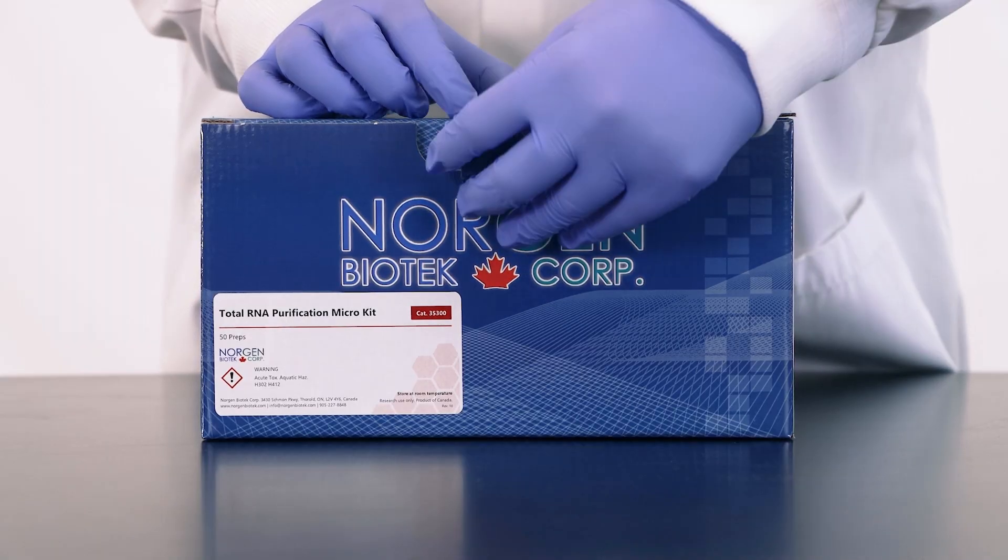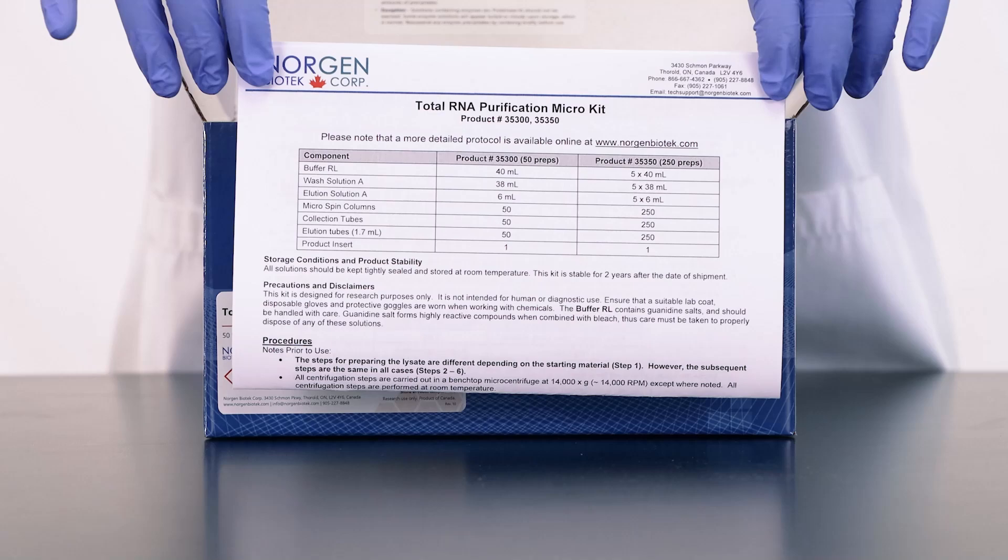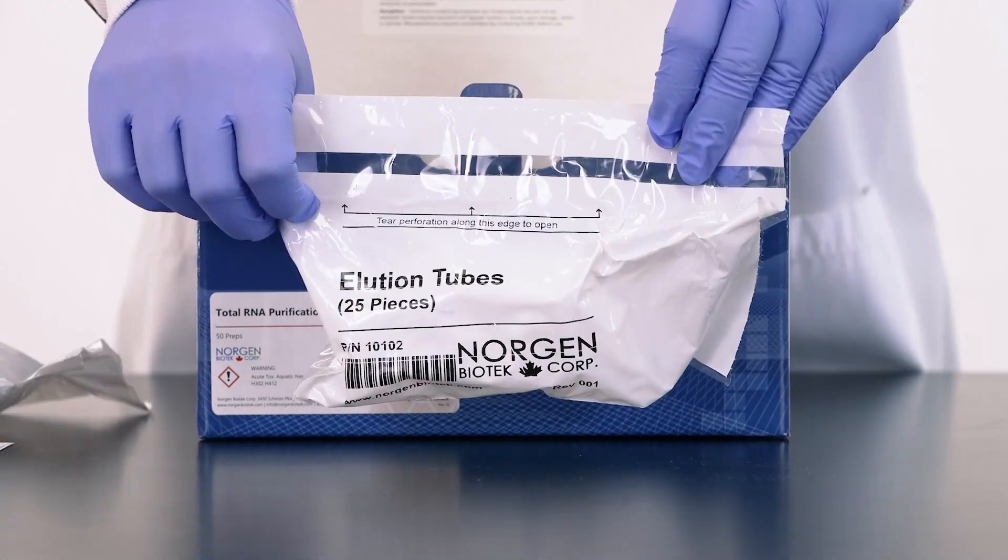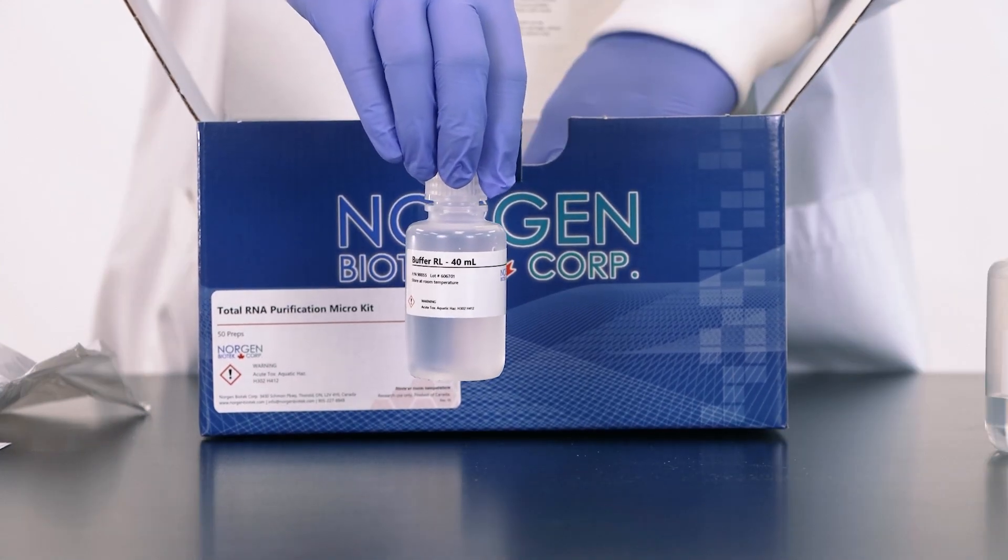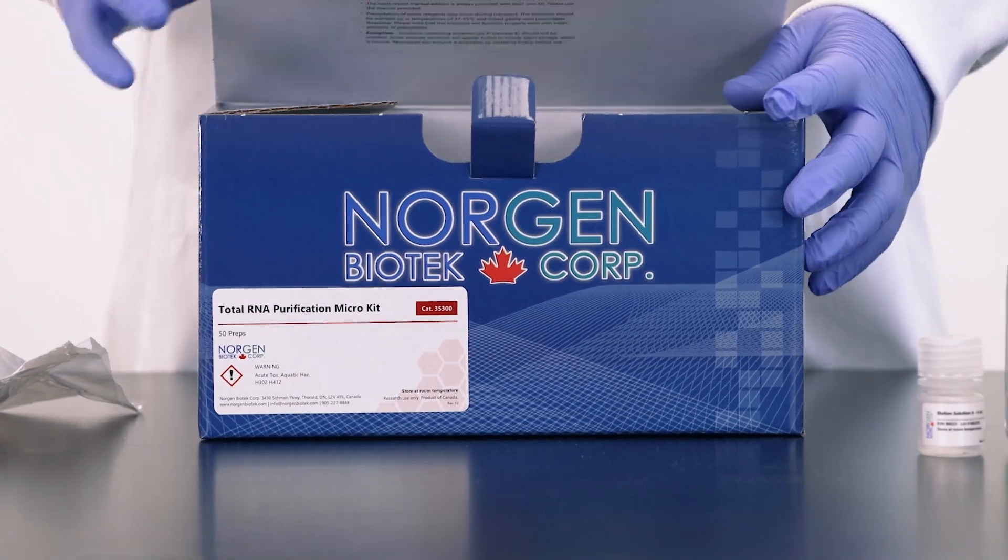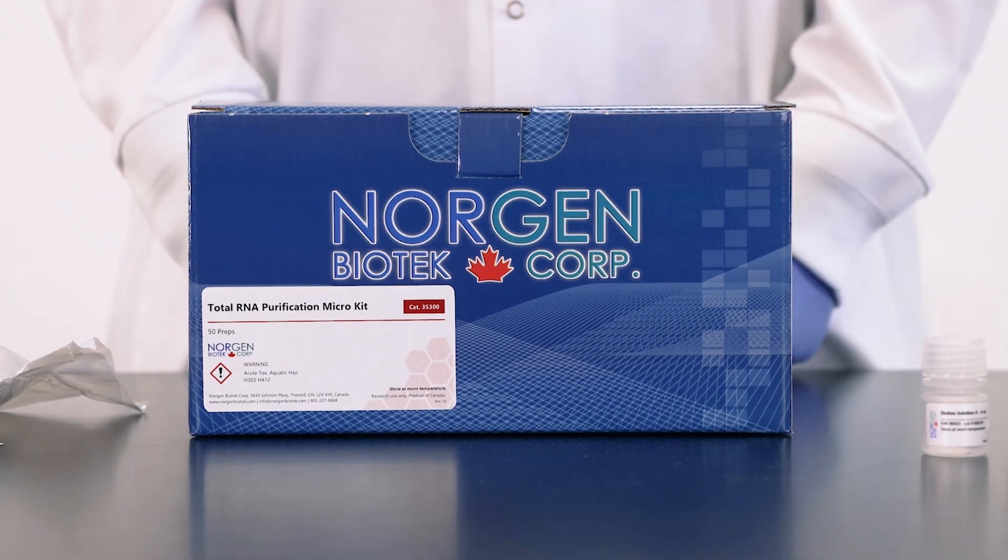Upon opening the kit, you will find a detailed product insert, micro-spin columns, collection tubes, elution tubes, wash solution A, buffer RL, and dilution solution A. You as the user will need to provide 96 to 100% ethanol and microcentrifuge tubes.